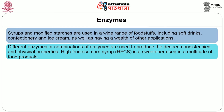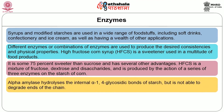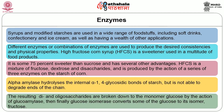High fructose corn syrup (HFCS) is a sweetener used in a multitude of food products. It is some 75 percent sweeter than sucrose and has several other advantages. HFCS is a mixture of fructose, dextrose and disaccharides, and it is produced by the action of a series of three enzymes on the starch of corn. Alpha-amylase first hydrolyzes the internal alpha-1,4 glycosidic bonds of starch but is not able to degrade the ends of the chain. The resulting dextrins and oligosaccharides are broken down to the monomer glucose by the action of glucoamylase. Finally, glucose isomerase converts some of the glucose into its isomer fructose.